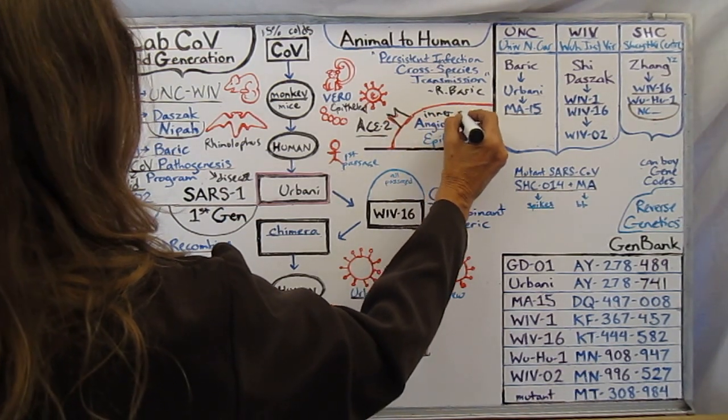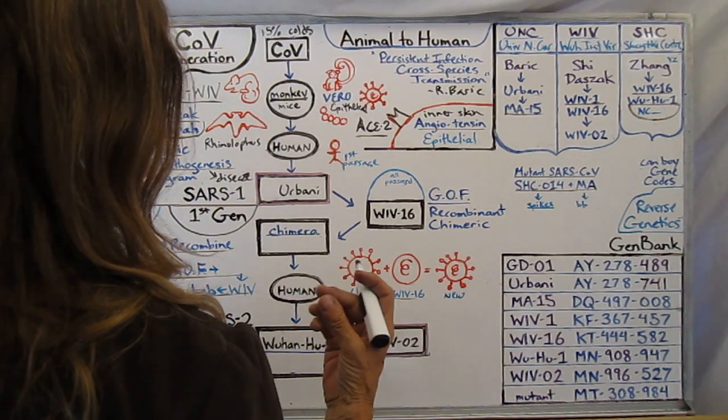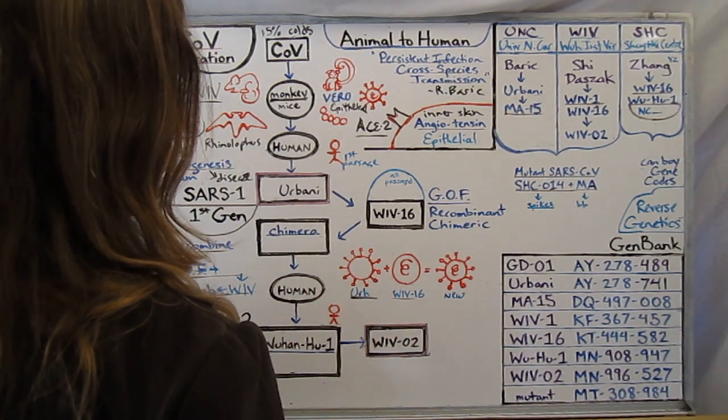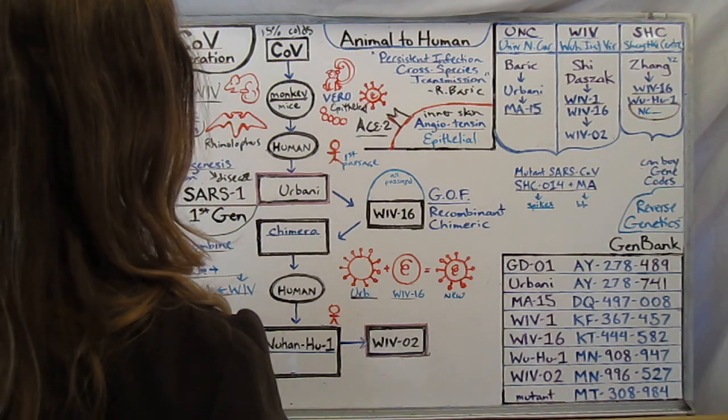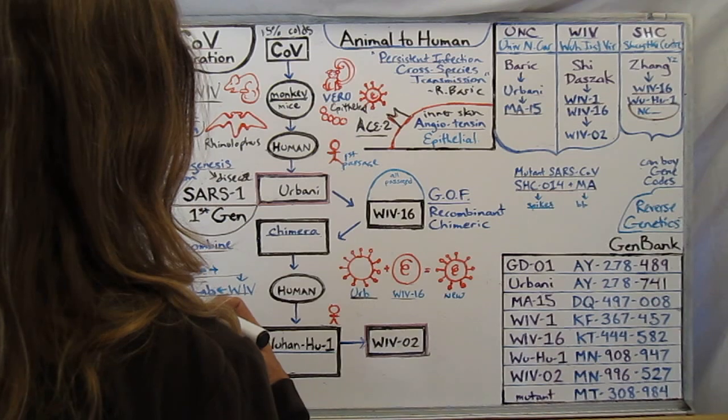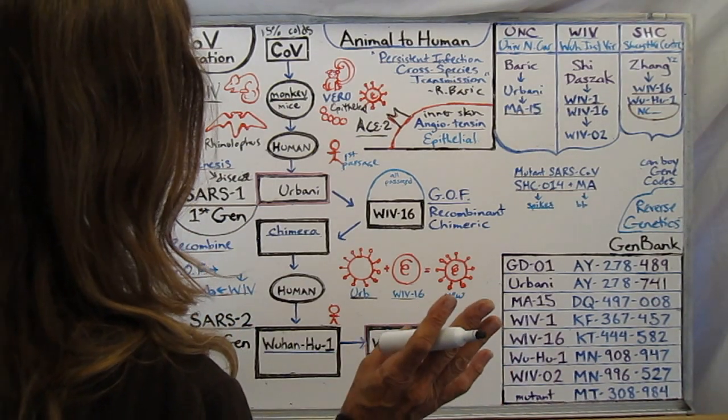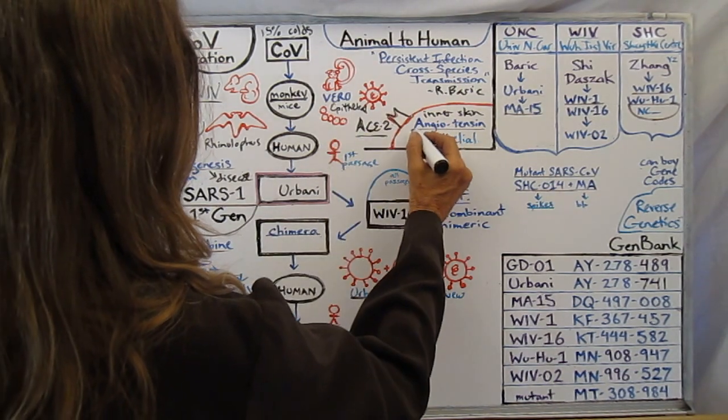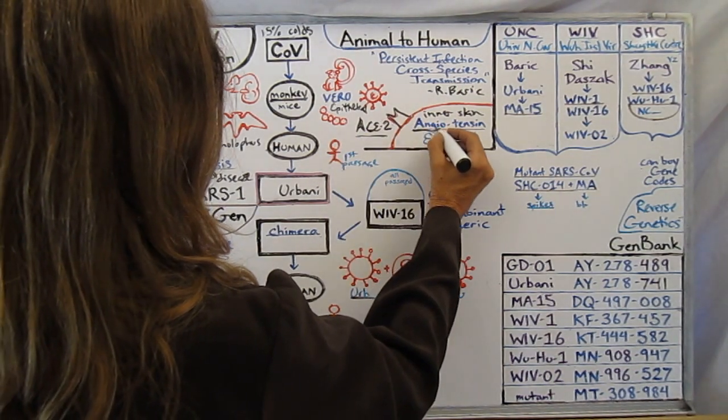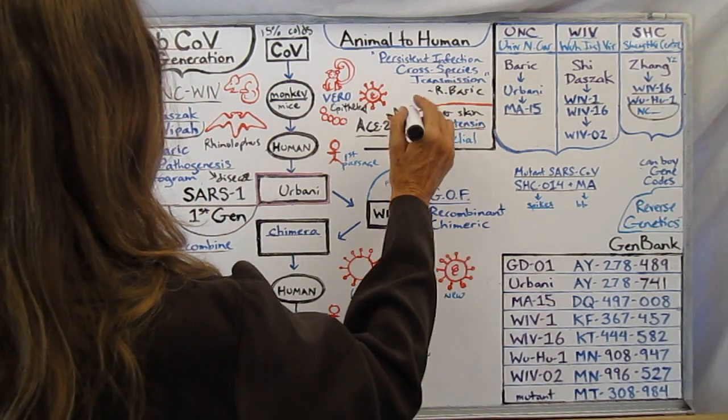And sure enough the ACE2 receptors that are on the epithelial cells that are the inner skin of your body, it is the cardio system, your blood vessels, your gastrointestinal tract, the uterus, the testes, your kidneys, your lungs. They've got these ACE2 receptors which are very important for the angiotensin tension balance in your body.